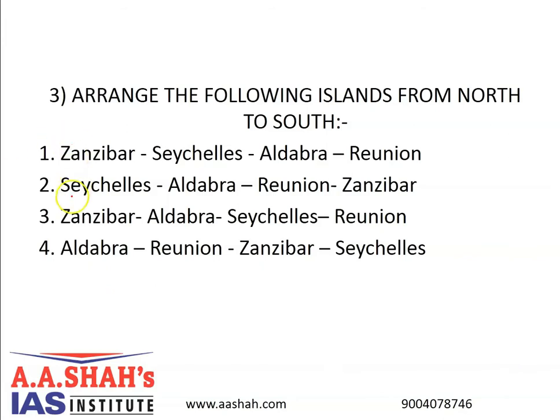The correct answer is option 1: Zanzibar–Seychelles–Aldebra–Reunion. Zanzibar is a semi-autonomous region of Tanzania consisting of many small islands and two large ones — Onguja and Premba Island. The capital is Zanzibar City located on Onguja Island, with its historic centre Stone Town being a World Heritage Site. The main island's fauna reflects its connection to the African mainland during the last ice age. Zanzibar leopards are declared rare or extinct.